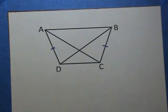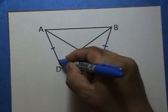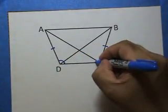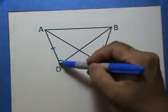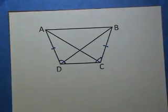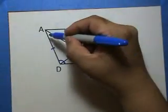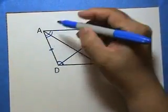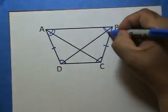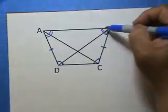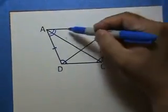In an isosceles trapezoid, the base angles are congruent. So here, angle ADC is congruent to angle BCD. And this other pair of base angles are congruent. Angle DAB is congruent to angle CBA.